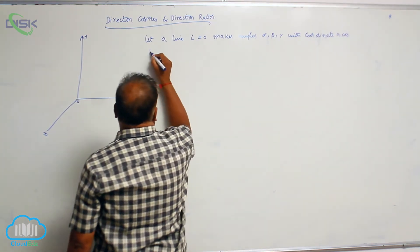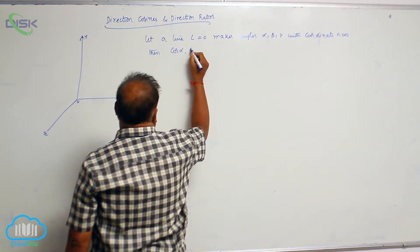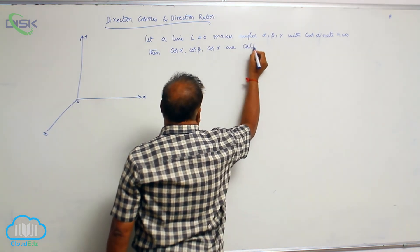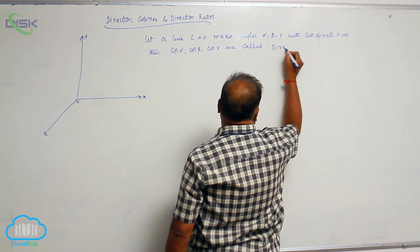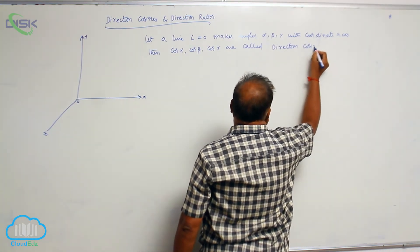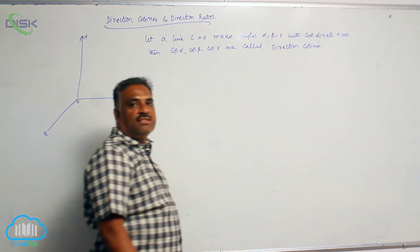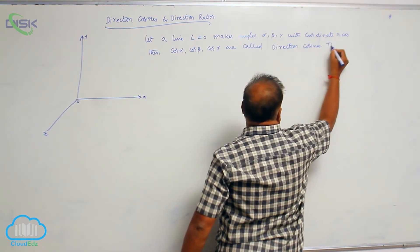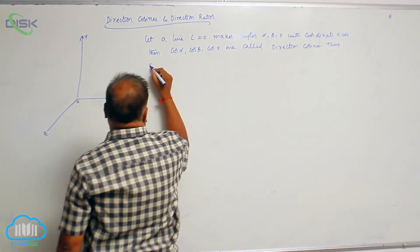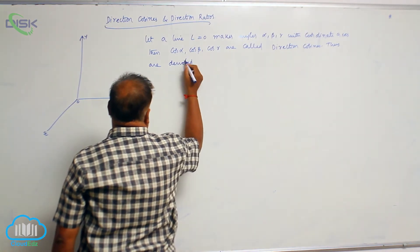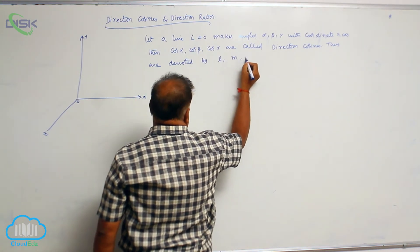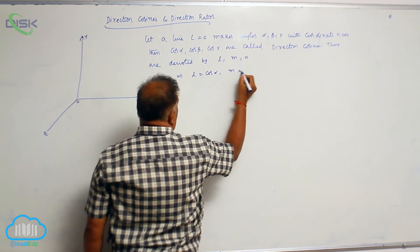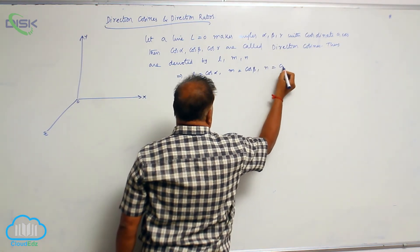The cosines of these angles — cos alpha, cos beta, cos gamma — are called direction cosines. Generally, direction cosines are denoted by L, m, n, where L = cos alpha, M = cos beta, and N = cos gamma.